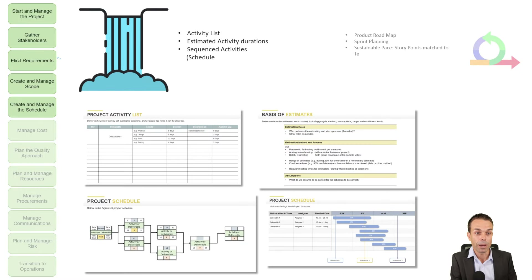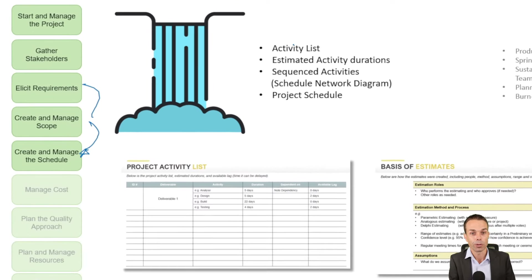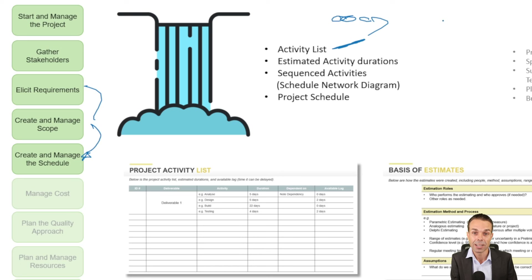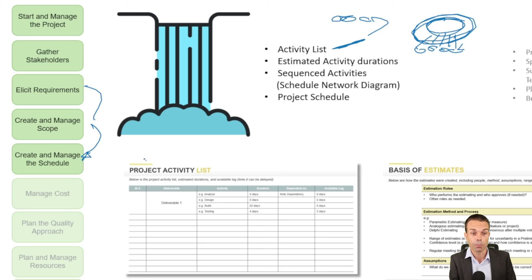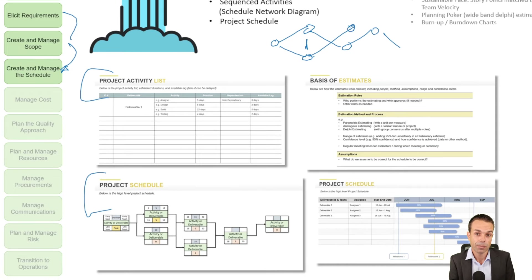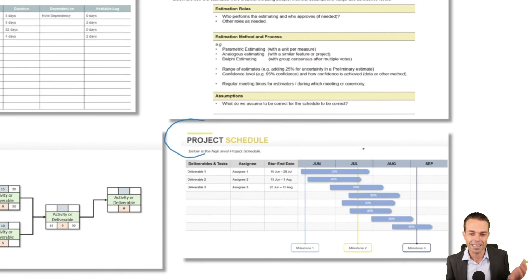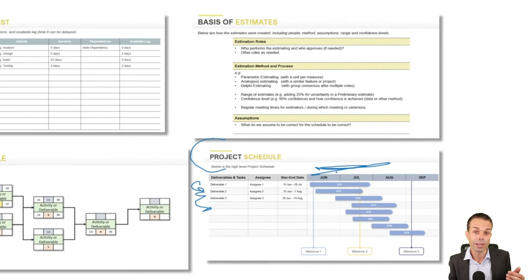Now that we've got scope, we can put that to a schedule — when can we deliver that scope? In Waterfall we get our scope and break it down into an activity list: what are the activities needed to deliver each deliverable? Then we sequence those activities — what order do they need to be completed in — and estimate their durations. There are many ways to estimate: bottom-up estimating, parametric estimating, three-point estimating from the PMBOK Guide. Lastly we create the schedule itself, which often looks like a Gantt chart showing our deliverables and when we're delivering them.